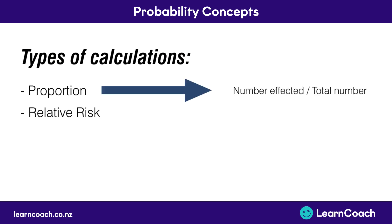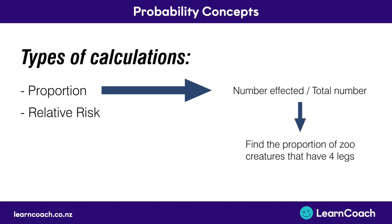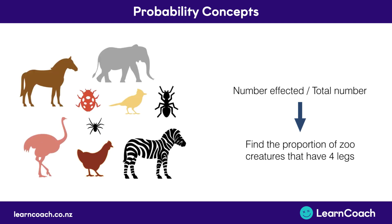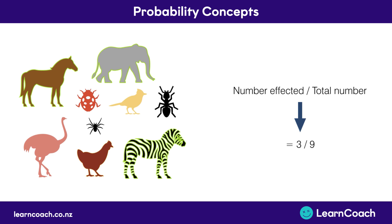The proportion is the number affected divided by the total number. A question might be: find the proportion of zoo creatures that have four legs. Looking at our zoo, we can see three creatures that have four legs, so that's three divided by nine — our total number of creatures — giving a proportion of 0.33.